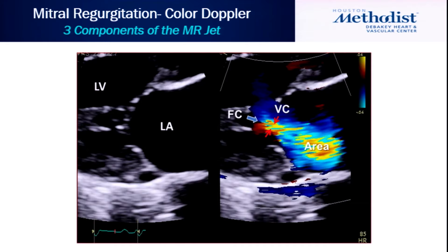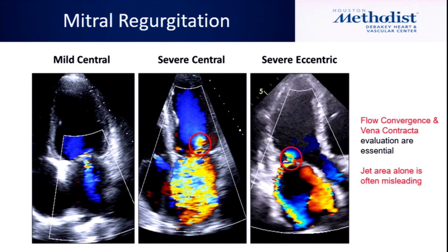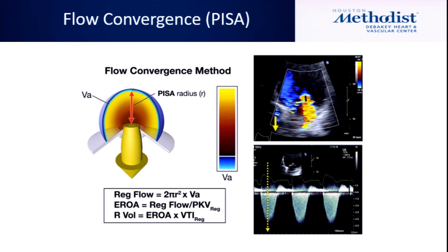If you want to remember one thing about color Doppler: it is not a volumetric approach, it's a velocity approach. It's great for telling us where the jet is going, but for evaluation of severity you have to look at the three components of the jet — convergence of flow into the atrium, the vena contracta which is the smallest area, and the regurgitation area, which can be influenced by direction and other things.